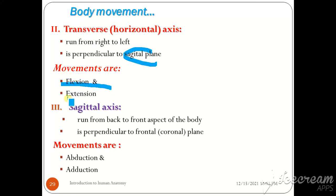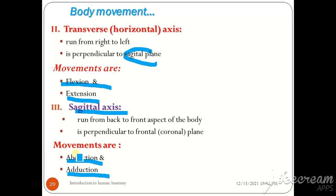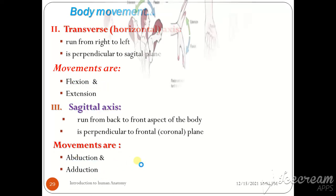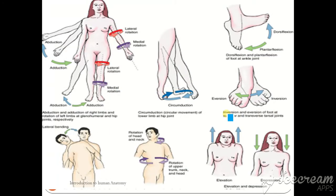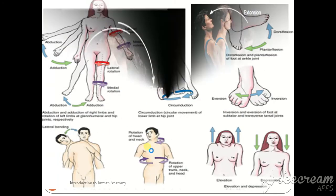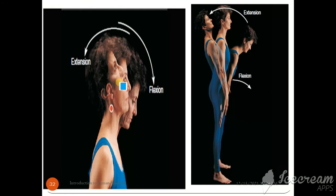The sagittal axis runs from the back to the front aspect of the body. Movements found along the sagittal axis are abduction and adduction. Adduction is movement toward the body, and abduction is movement away from the body.